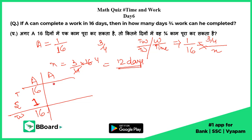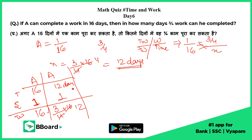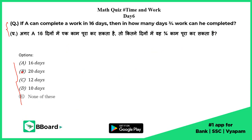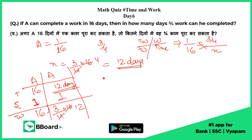The question says A has to do 3/4 of the work, meaning 3/4 of 16, that is 12 units of work. So in how many days will he do it at A's speed? Time equals total work upon speed, that is 12 days. So from here too, the answer is 12 days — option C is our answer. I hope you liked the solution, thank you.